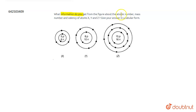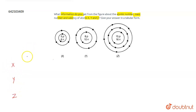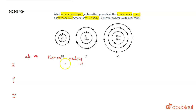The question asks: what information do you get from the figure about the atomic number, mass number, and valency of atoms X, Y, and Z? We need to draw a table for this — with columns for X, Y, and Z — and fill in the atomic number, mass number, and valency for each.